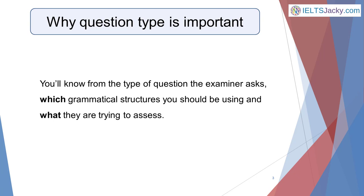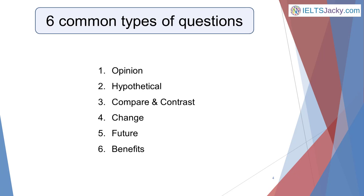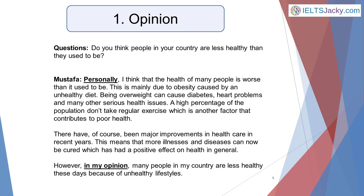You won't get asked every type of question. Most of the examiner's questions will follow up on what you said in your previous answer, but they'll mix it up so that you get a good variety of types. These are the 6 common types of questions in IELTS Speaking Part 3: 1. Opinion, 2. Hypothetical, 3. Compare and Contrast, 4. Change, 5. Future, 6. Benefit.